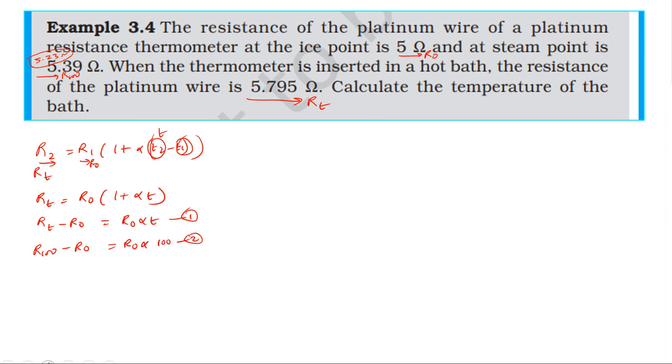Dividing: (R_100 - R_0)/(R_t - R_0) = (R_0 α 100)/(R_0 αt). R_0 and α cancel, giving (R_100 - R_0)/(R_t - R_0) = 100/t. Therefore, t = 100(R_t - R_0)/(R_100 - R_0).